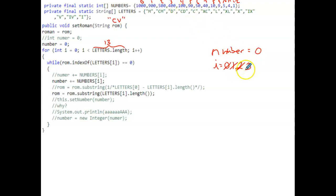We increment to 4, and at element 4 we find the string C that's in ROM. So now we're starting with ROM equal to capital C capital V, i is equal to 4, and now we enter the while loop. And number is going to be added to the value of the numbers array element 4. So we go to numbers array 0, 1, 2, 3, 4 is 100. So now 0 plus 100 is 100.